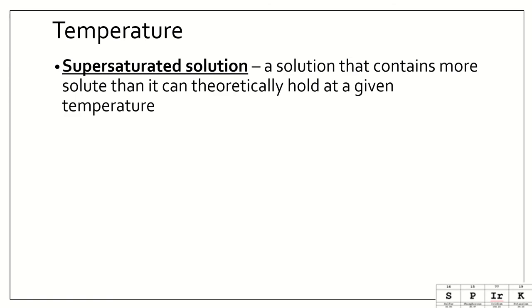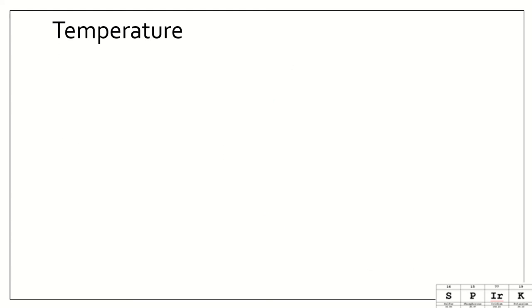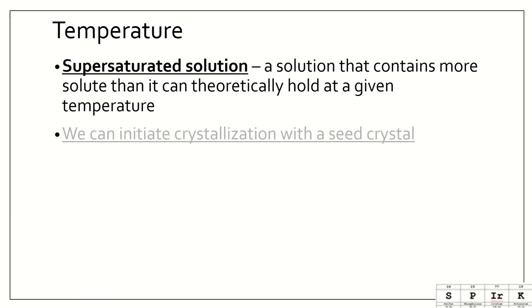All right, a supersaturated solution. This is a solution that contains more solute than it can theoretically hold at a given temperature. So again, let's just look at sodium nitrate. So sodium nitrate at 70 degrees Celsius should max out at 20 grams. However, there is a way that we could get more into that solution. And how we do that is we actually heat it up. So we make it go to like 80 degrees Celsius, and maybe we dissolve like 30 grams. And then we let it cool back down. And sometimes those crystals of sodium nitrate will stay dissolved. And so we can initiate that crystallization. So we can make those crystals what we call crash out or form again, by adding a seed crystal. So we're going to go ahead and look at this link I have for you.